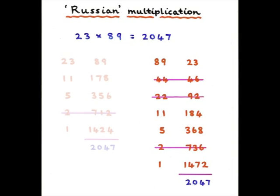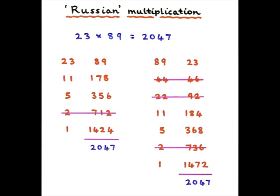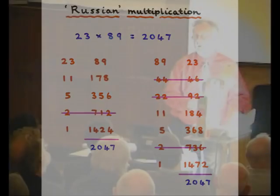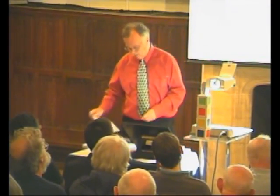So you might like to think about why this works. Basically, the reason it works can be seen if you put each of these numbers into binary notation. We use a scale of 10, but if you put things in a scale of 2 and work through, it'll become clear to you why this method works. But it's quite interesting.